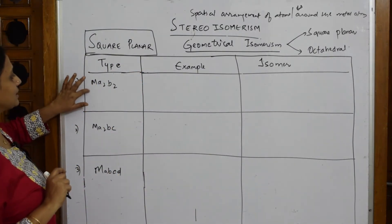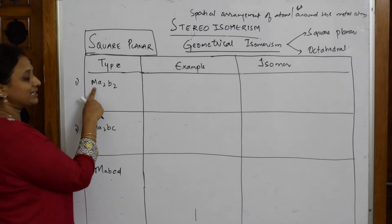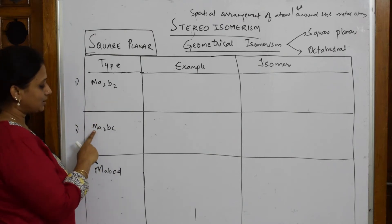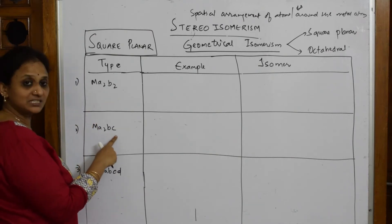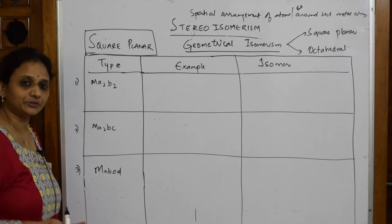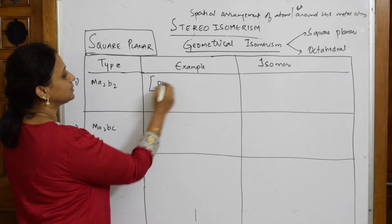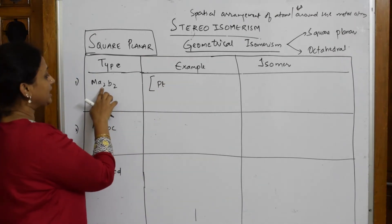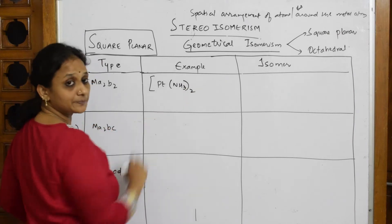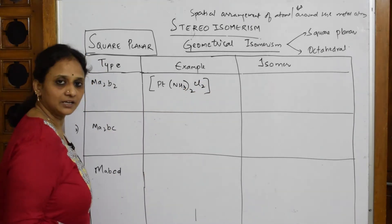For square planar complexes, there are three types. The metal atom is in the center with four ligands. For the MA₂B₂ type, the metal atom has four ligands total. Let us write one example: instead of the metal atom I will write Pt, instead of A₂ I will write NH₃ taken twice, and instead of B₂ I will write Cl₂.